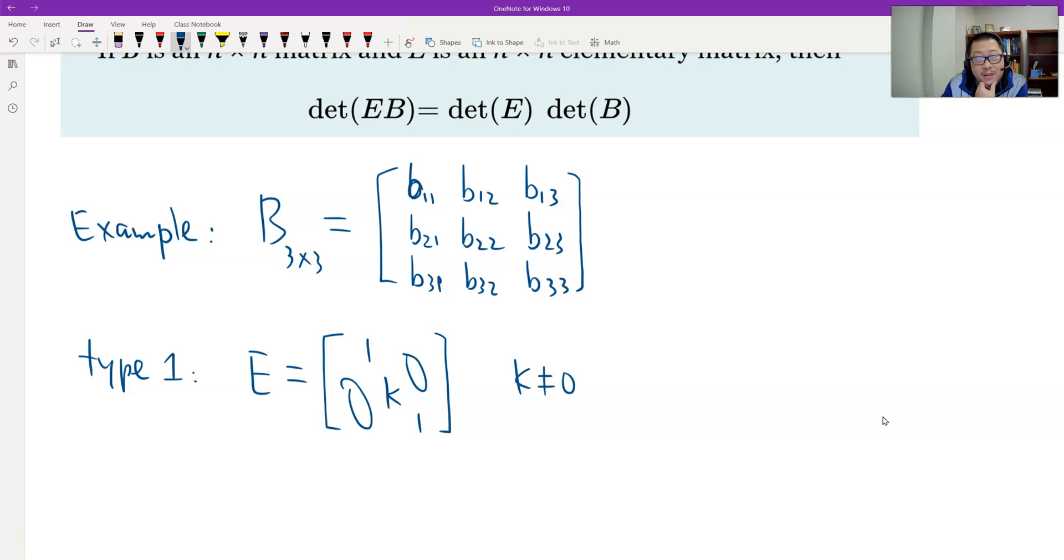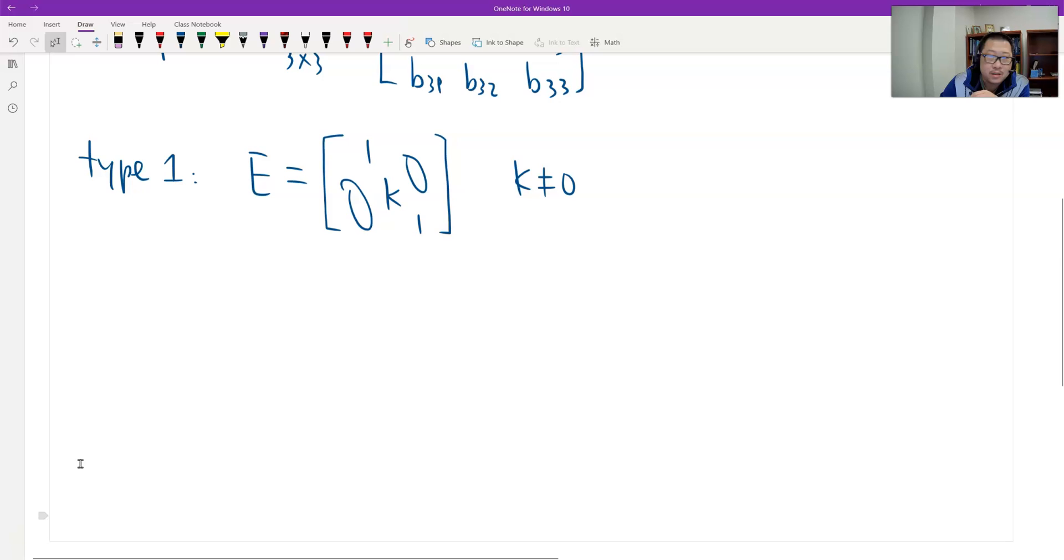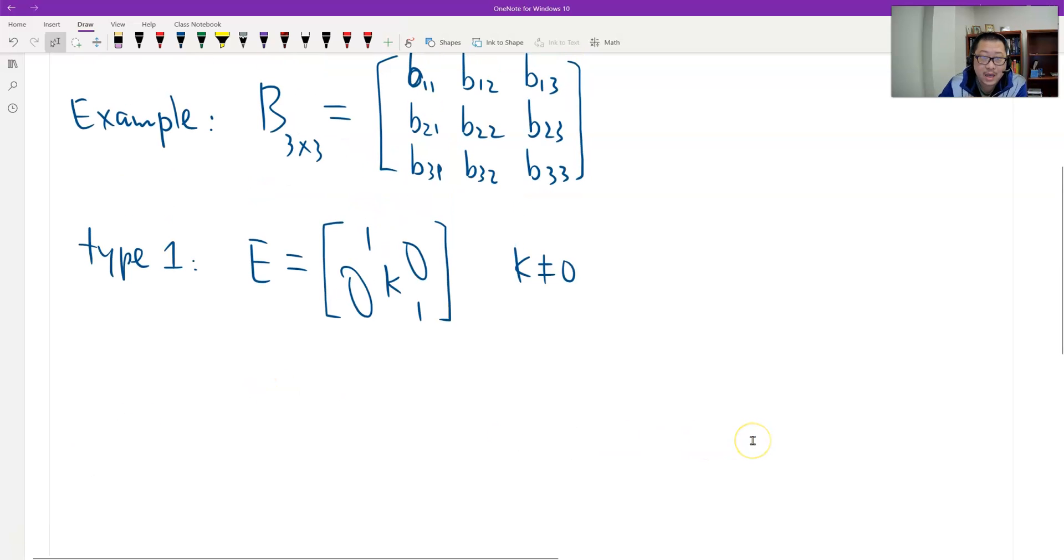Here is k, here is 1, here is 1, all zeros. K does not equal 0 in this special case. Then we look at it. Is the result true? Yeah, definitely. Because now, that's just a calculation. What is EB? E times B.